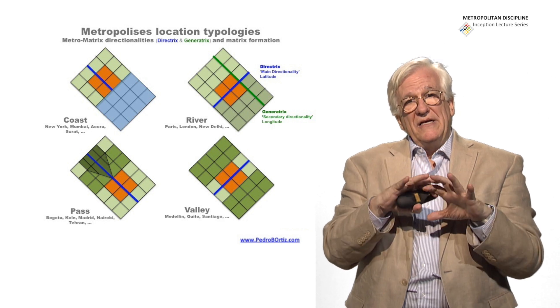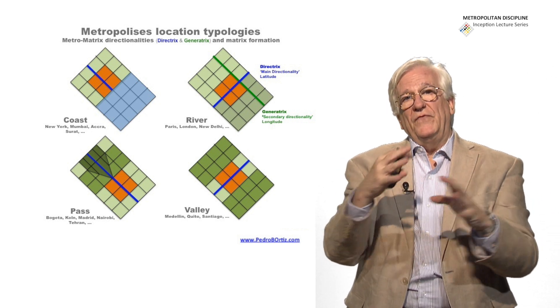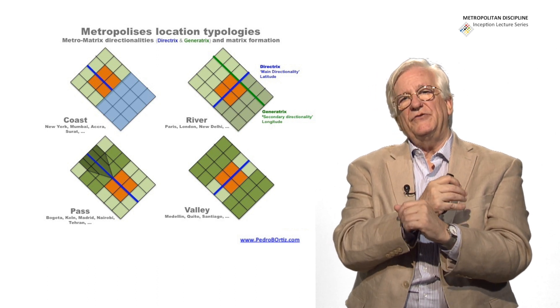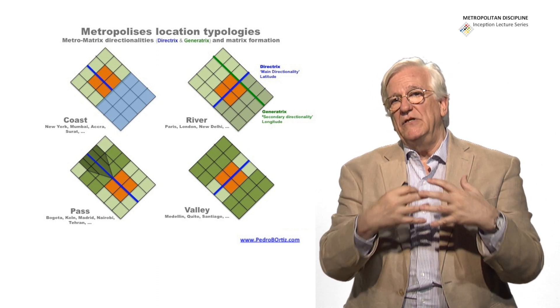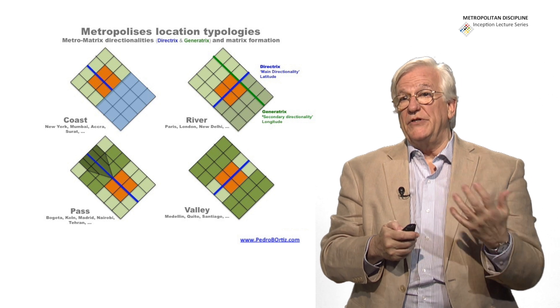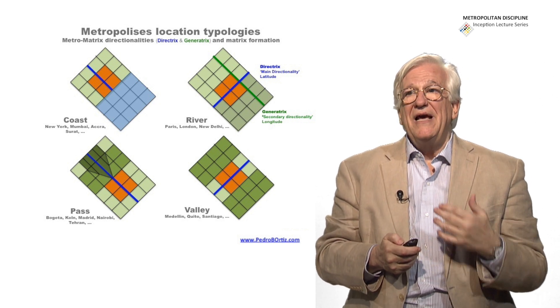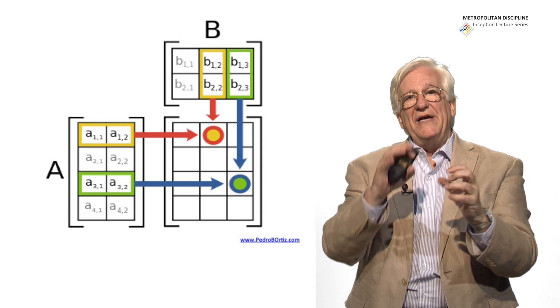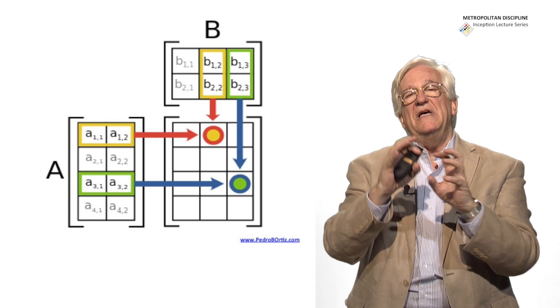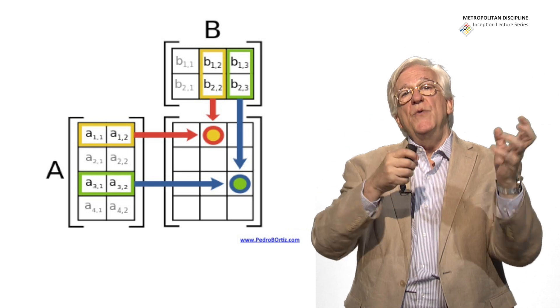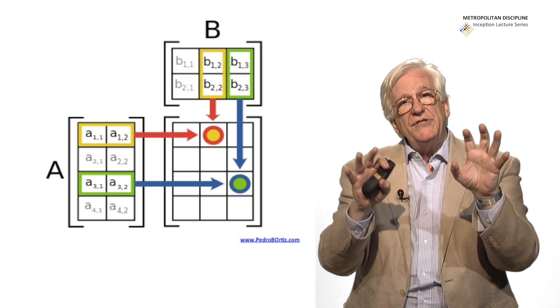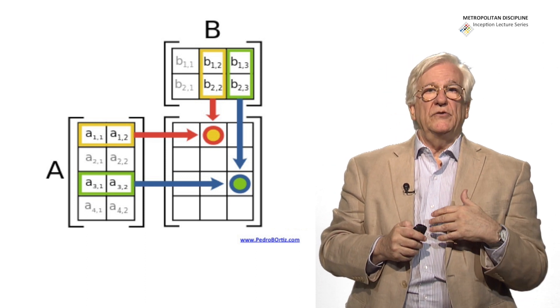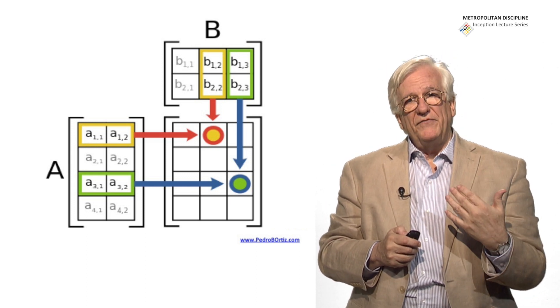We have then a system of linearities, the generatrix and the directrix, that create a pattern of a reticula, of a quadricula, which is in fact a matrix. And you can deal with those matrixes in a mathematical way by providing numbers to these different areas of the metropolis and working together what is the composition that will reach the equilibrium in social equity or economic efficiency.